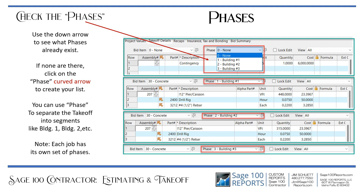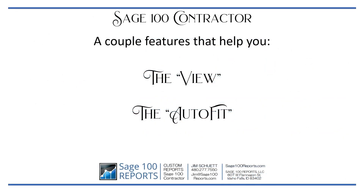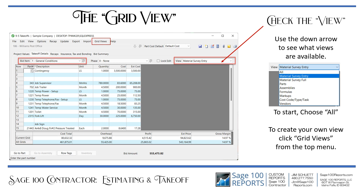You can use phase to separate the takeoff into segments like building one, building two, et cetera. Note that each job has its own set of bid items. A couple of features that will help you: the view and the auto fit. Use the down arrow to see what views are available. To start, use all. To create your own view, click grid views at the top in the little box from the top menu. You'll find that these views allow you to zero in just on the columns that you need — it's an amazing feature.